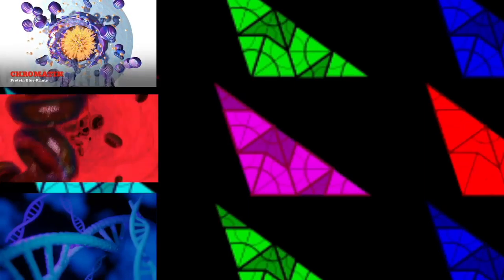Mitosis is a part of the cell cycle in which replicated chromosomes are separated into two new nuclei. Cell division gives rise to genetically identical cells in which the total number of chromosomes is maintained.